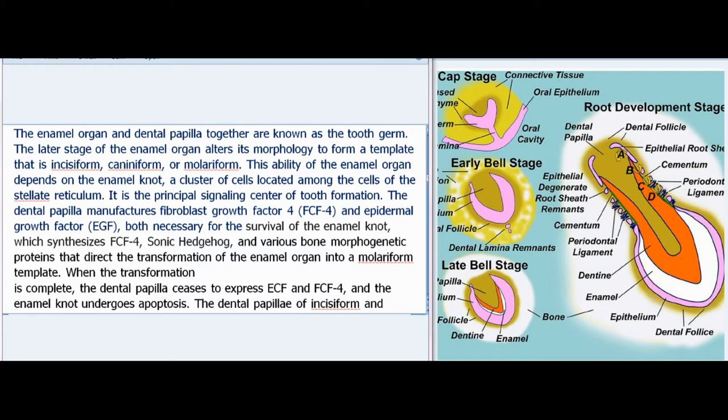The later stage of the enamel organ alters its morphology to form a template that is incisiform, caniniform, or molariform. This ability of the enamel organ depends on the enamel knot, a cluster of cells located among the stellate reticulum and the principal signaling center of tooth formation. The dental papilla manufactures FGF4 and EGF, both necessary for the survival of the enamel knot, which synthesizes FGF4, sonic hedgehog, and various bone morphogenetic proteins that direct the transformation of the enamel organ into a molariform template.